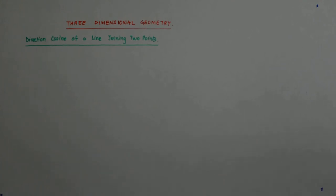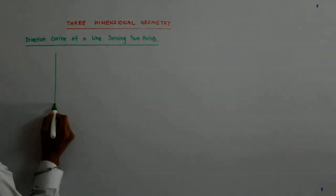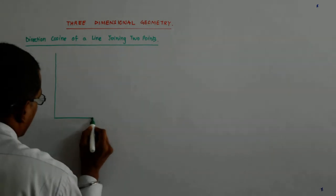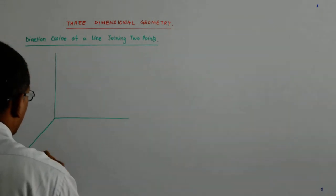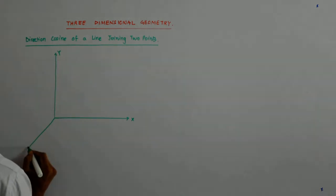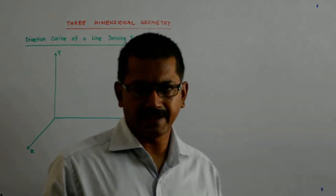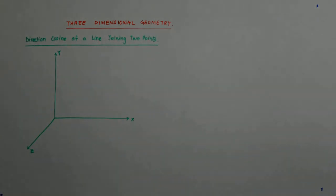Now, we come to the direction cosine of a line joining two points. Let us say we are given two points and we want to find out. So, this is my x, y, z axis. Two points are given. Say x1, y1, z1 and x2, y2, z2, they are given.